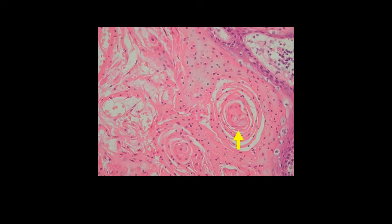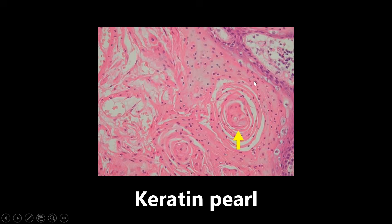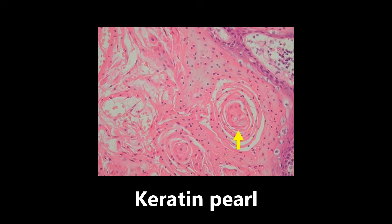This next example has the yellow arrow pointing to a keratin pearl. This is concentric layers — kind of like an onion — of squamous cells, commonly seen in various squamous cell carcinomas. These are concentric round layers of keratin squamous cells, and they're seen in various squamous cell carcinomas. Keratin pearl.